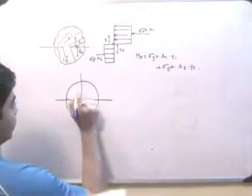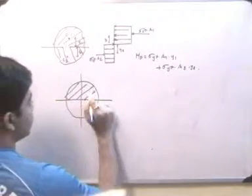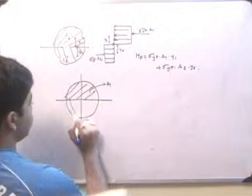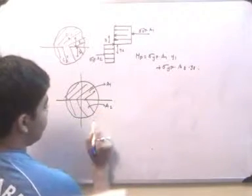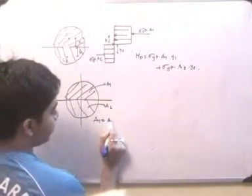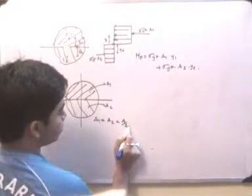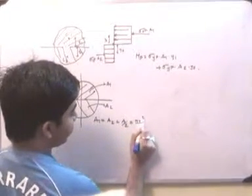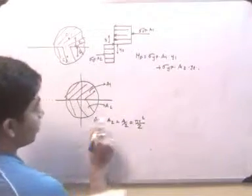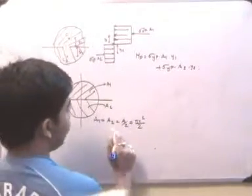...and this suppose is a1 and this is a2, then a1 is equal to a2 is equal to a by 2, or πr² by 2. So a1 is equal to πr² by 2, a2 is equal to also πr² by 2.